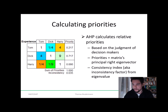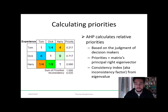One note should be added here: there is also a consistency index, or so-called inconsistency factor, which is calculated from the eigenvalue. It looks into whether the judgments entered into the matrix are truly consistent. For example, if Tom is better than Dick, and Dick is better than Harry, then Tom also needs to be better than Harry. If we then said Harry is better than Tom, we would have a circular inconsistency. This consistency index detects such inconsistencies in the judgments we enter into the matrix.